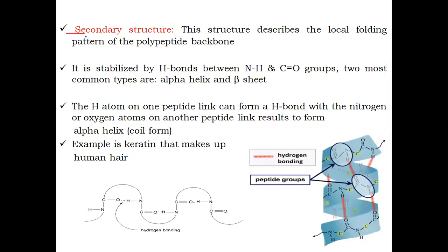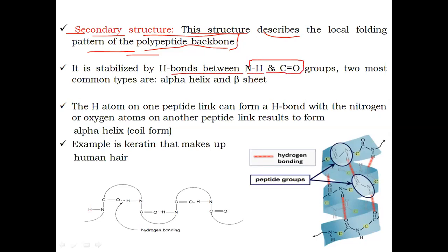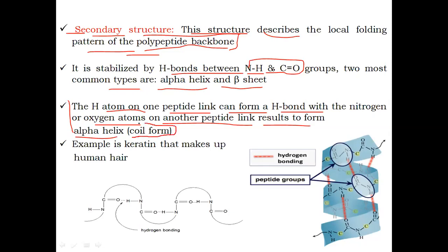The next stage is the secondary structure, which describes the local folding pattern of the polypeptide backbone. It is stabilized by hydrogen bonds between NH and C=O groups. The two most common types are the alpha helix and beta sheets. In the alpha helix, the hydrogen atom of one peptide linkage forms a hydrogen bond with the nitrogen or oxygen atom of another, resulting in a coil form. An example is keratin, which makes up human hair.